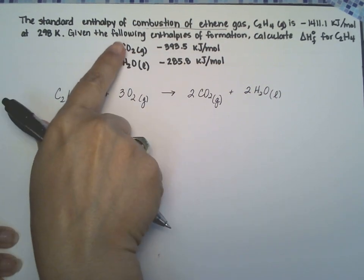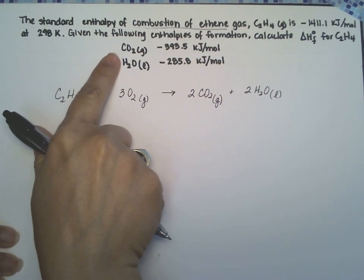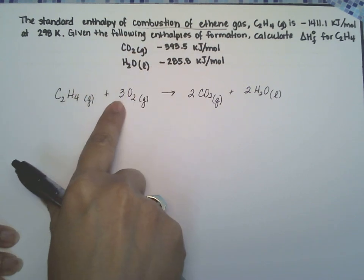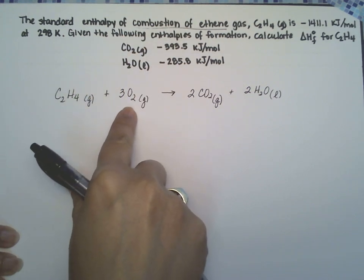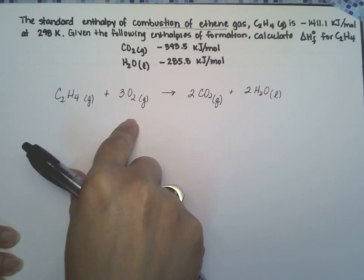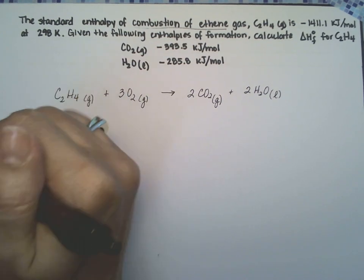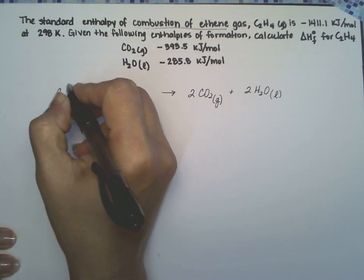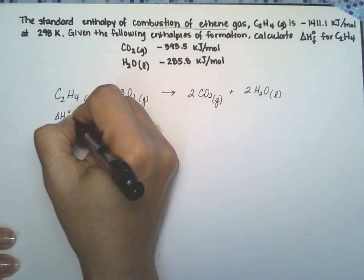All right, they give us the enthalpies of formations for CO2 and water. Oxygen is in its natural state so the enthalpy of formation for oxygen gas is zero, and they want the enthalpy of formation for ethene, so this is what they want.